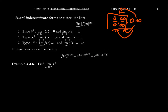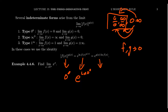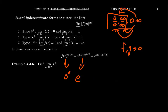For example, if f and g both go to 0, this thing looks like 0 to the 0, which becomes e to the natural log of 0 times 0 — but this inner part looks like 0 times the natural log of 0, and the natural log of 0 is essentially negative infinity. So you get e to the 0 times infinity, which is an indeterminate form we know how to compute. That's how we're going to proceed to compute these exponential indeterminate forms.